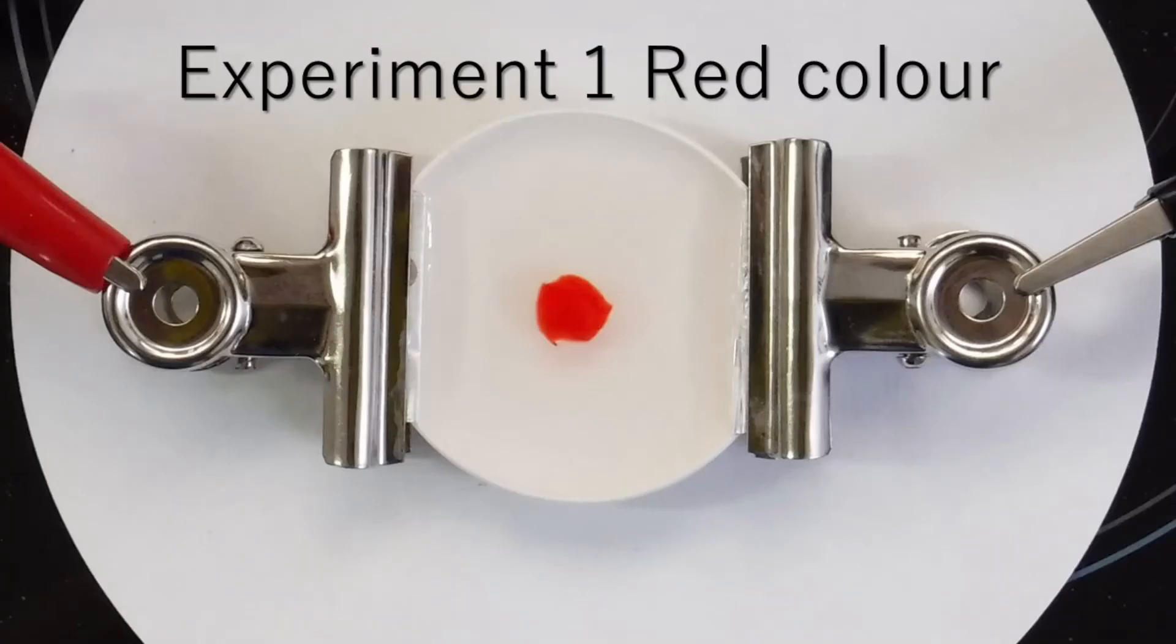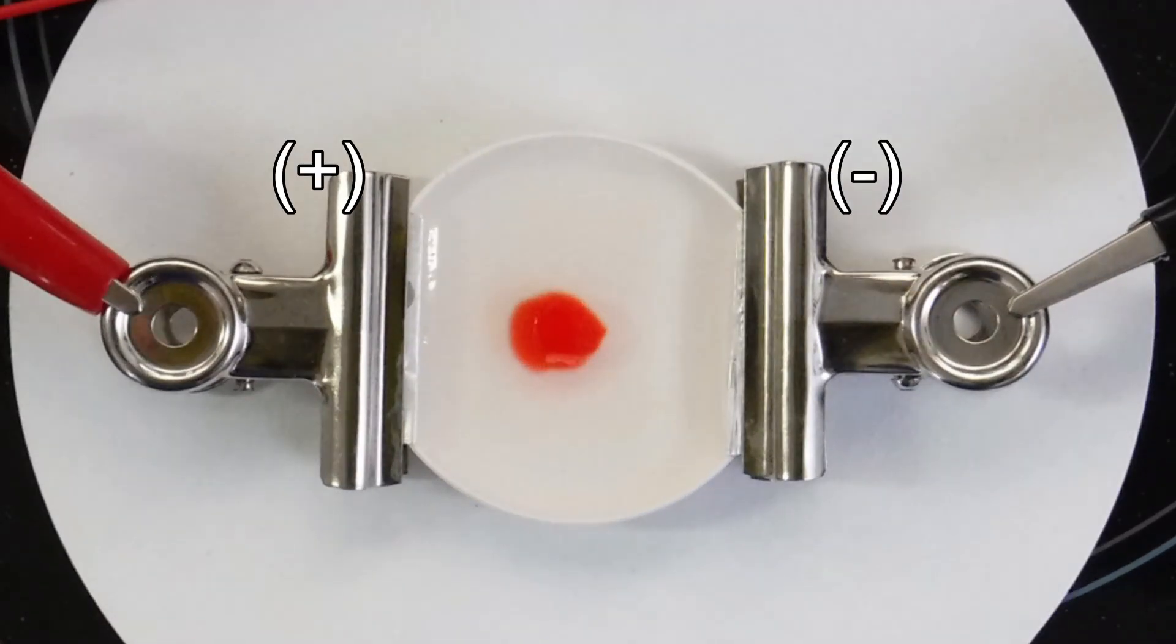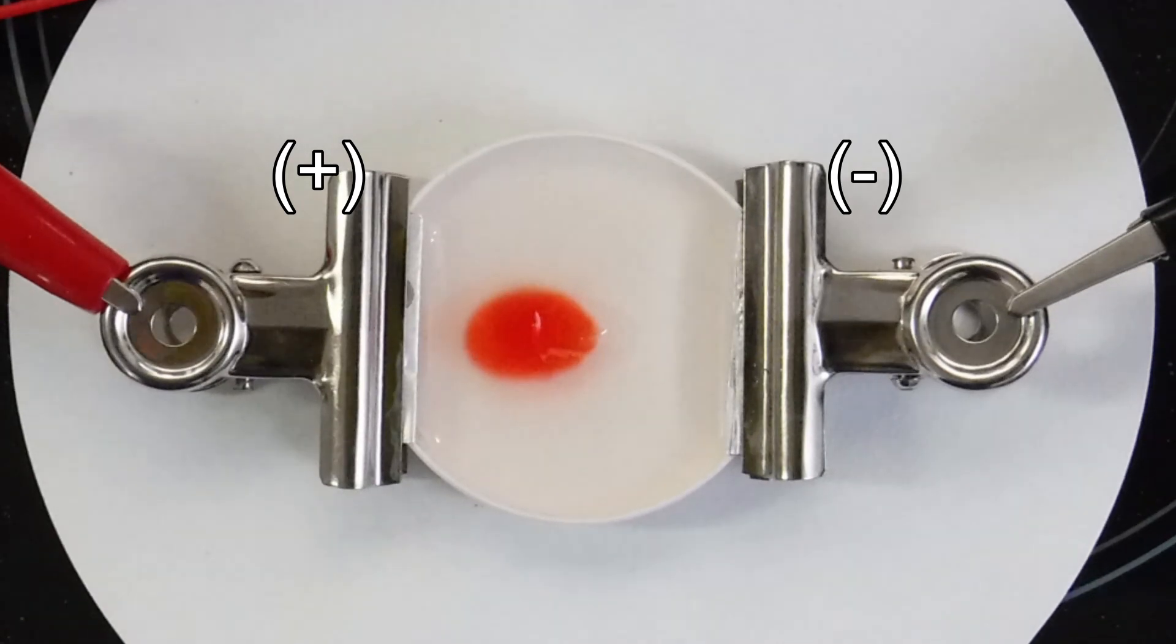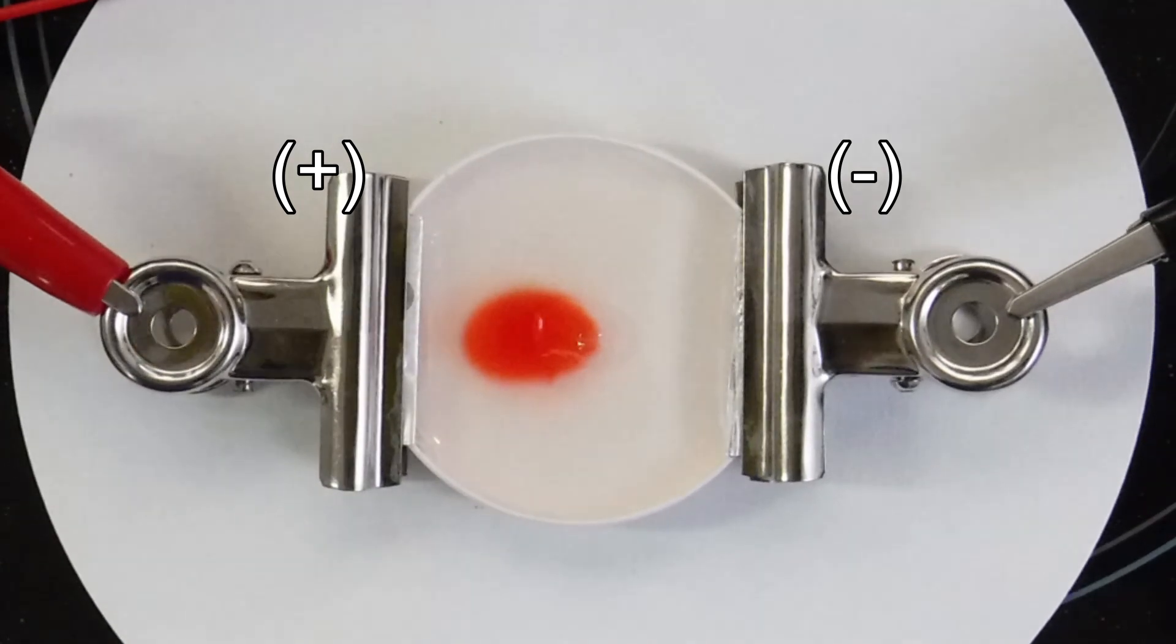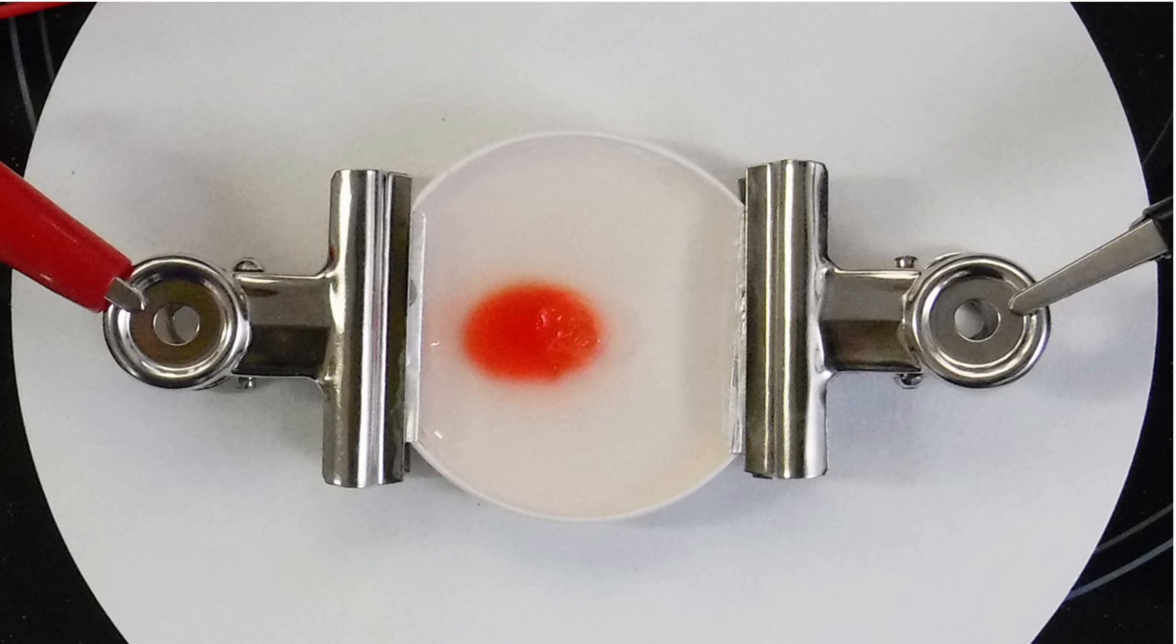The first experiment is red color. The ingredient of red color moves to positive electrode.